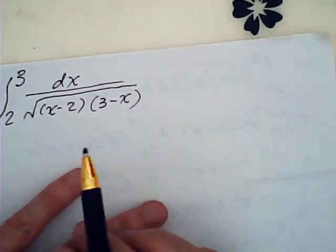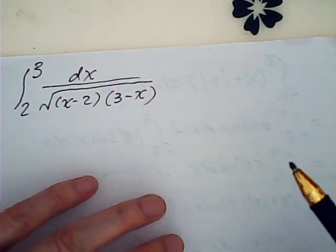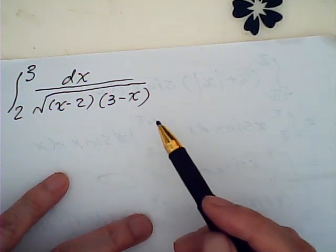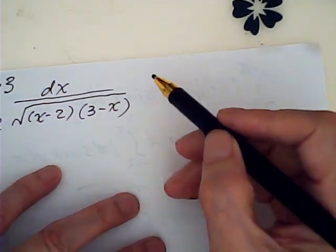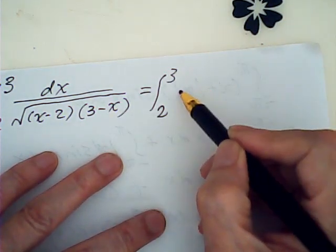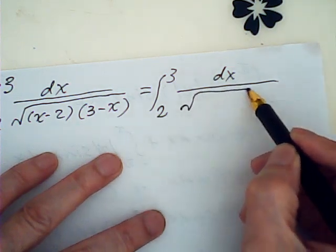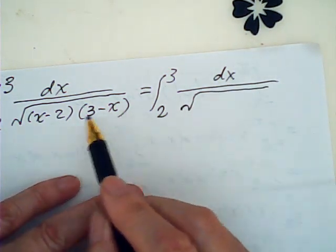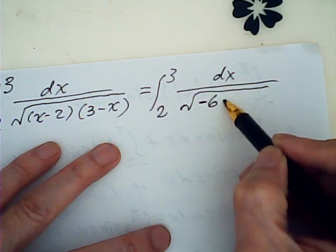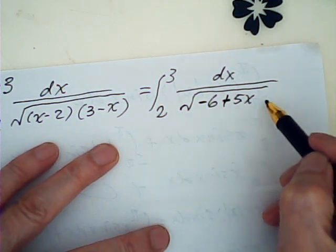Well, let's integrate a rather very basic integration here. We are using completing the square. This one is equal to the integral from 2 to 3 of dx. When you pick up the brackets, this is minus 6 plus 5x and minus x squared.